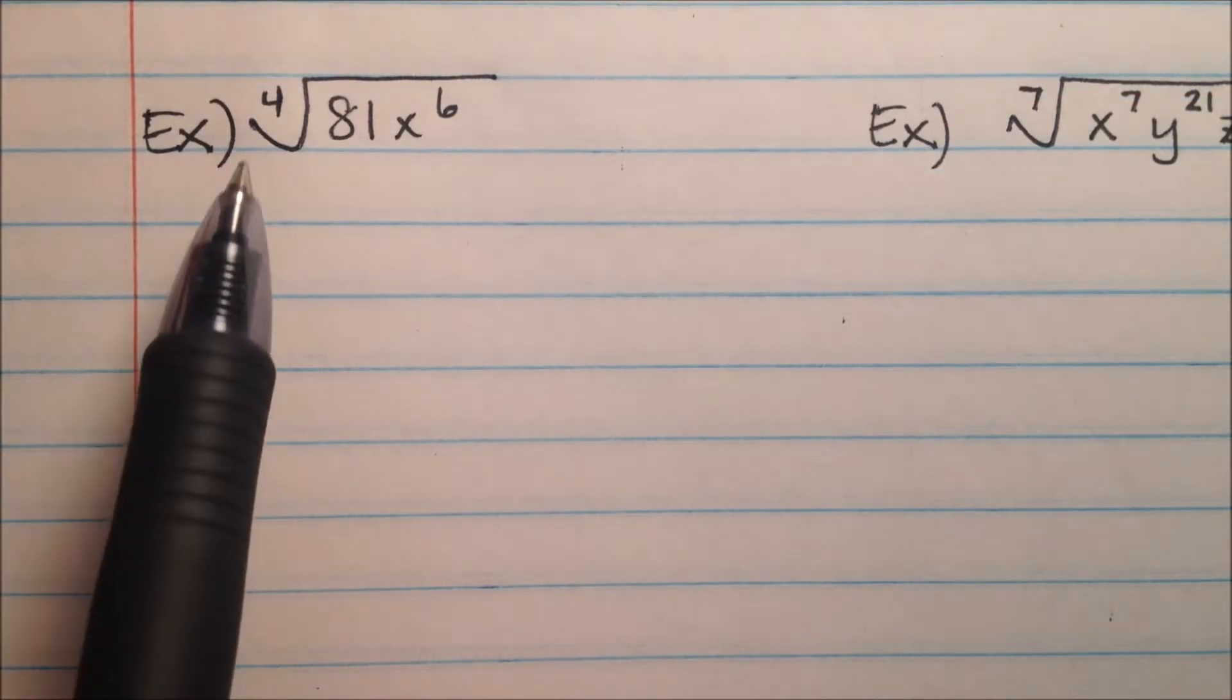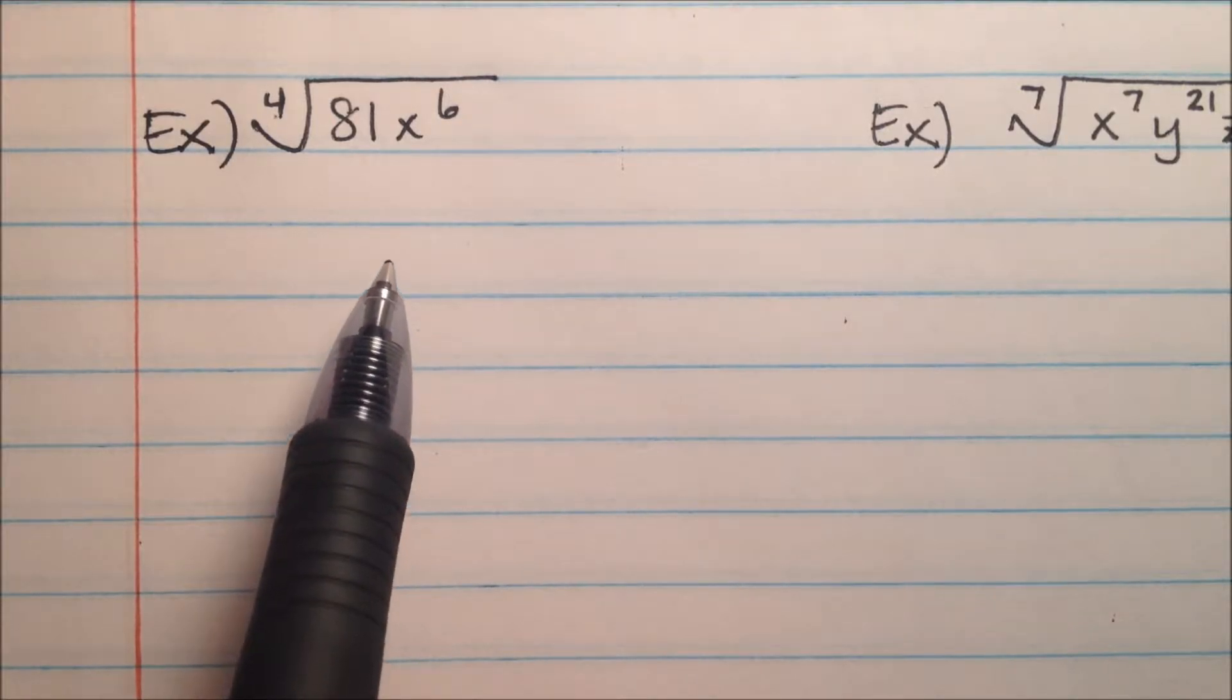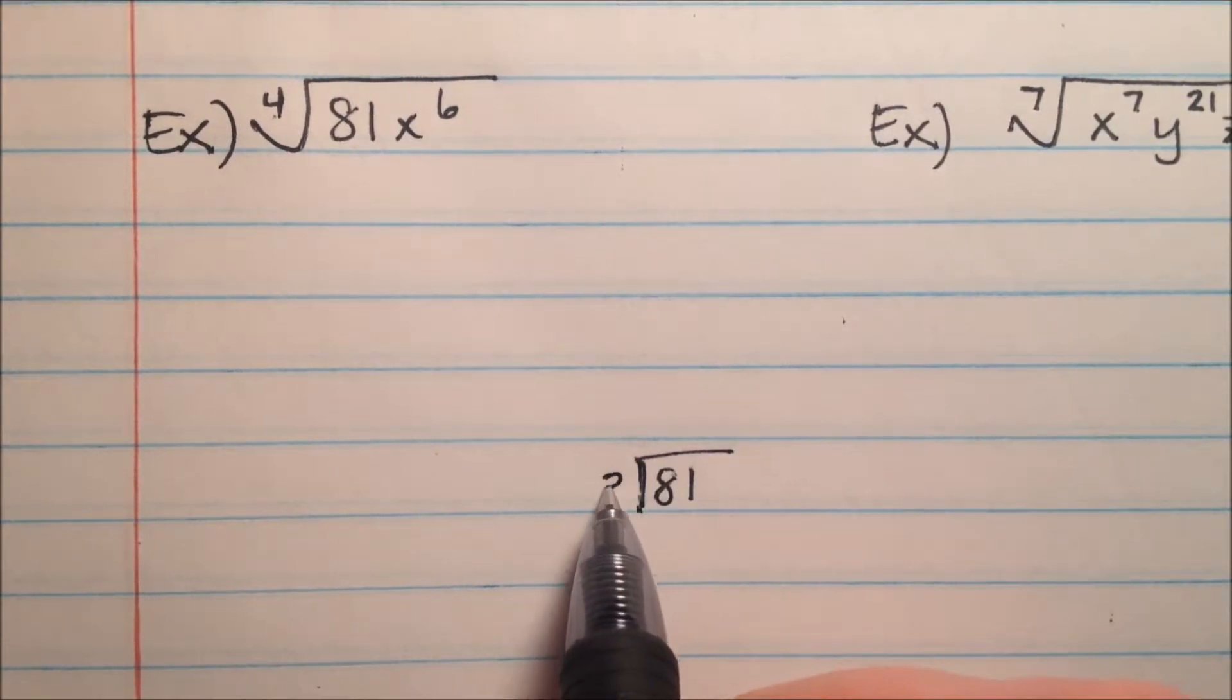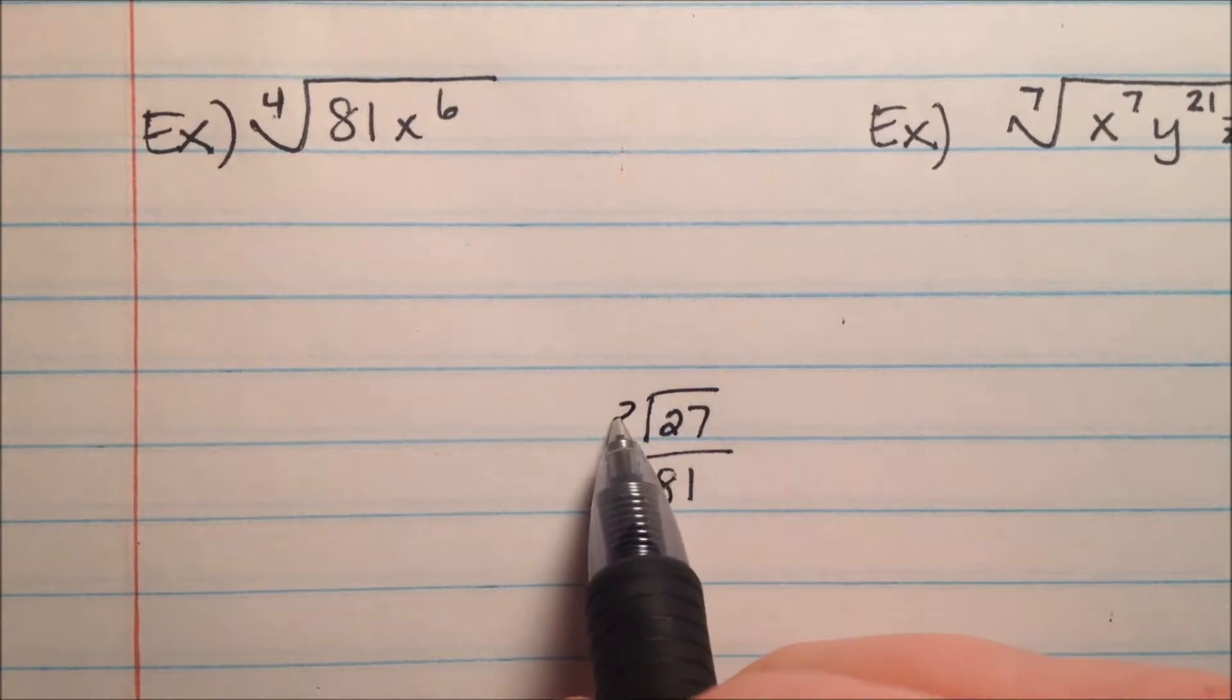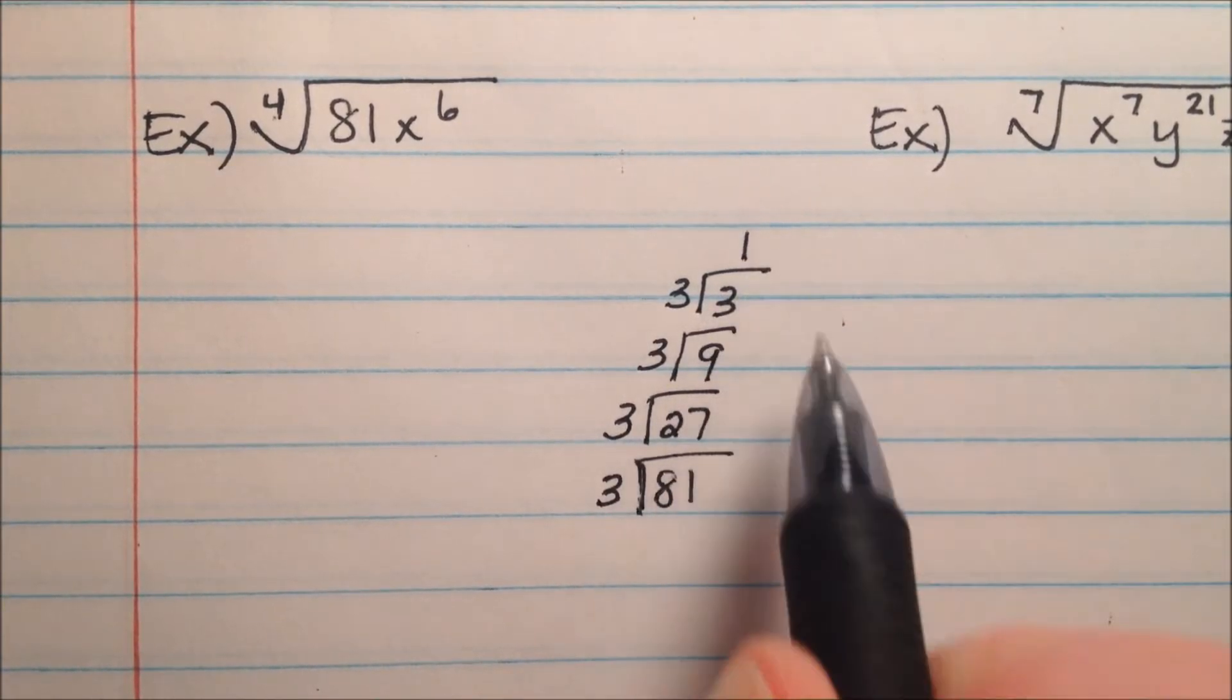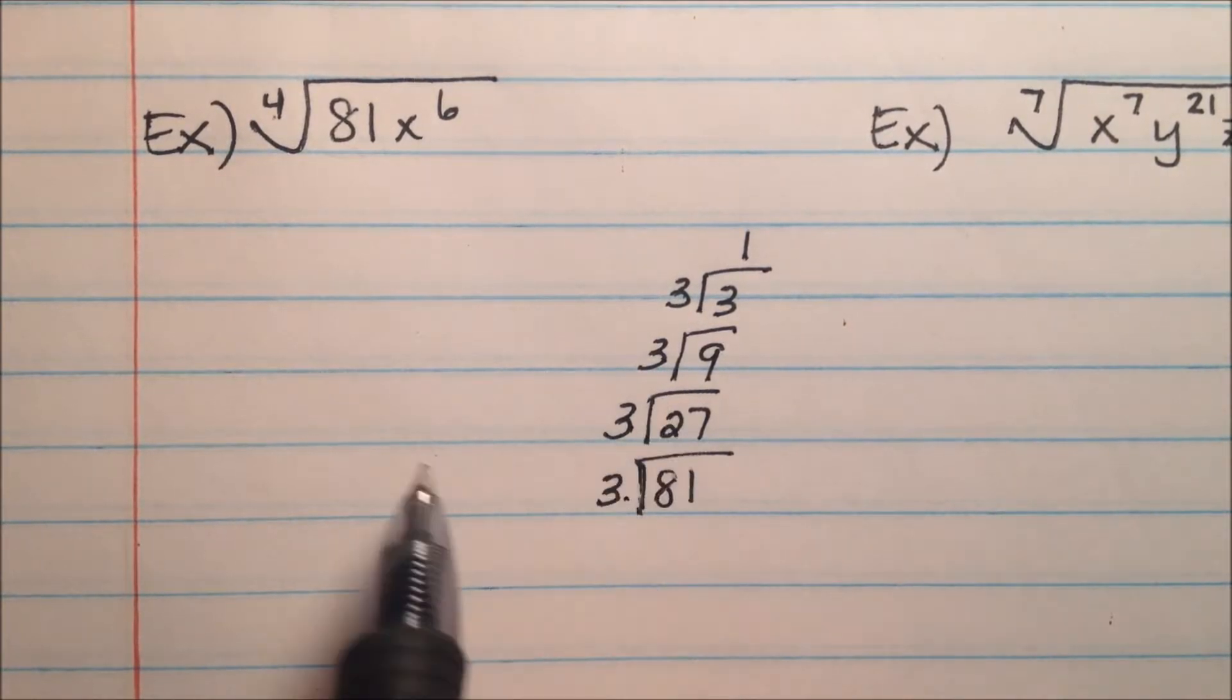In our next example, we see the 4th root of 81x to the 6th. So in order to do this, I'm going to start with this 81 and find the prime factorization of it. So I'll drop that down here and divide out a 3, because that's prime, and I'll get 27. Divide out another 3, and I have 9. One more 3 gives us 3, and a final 3 gives us 1. So this is 1, 2, 3, it looks like 4 3's.